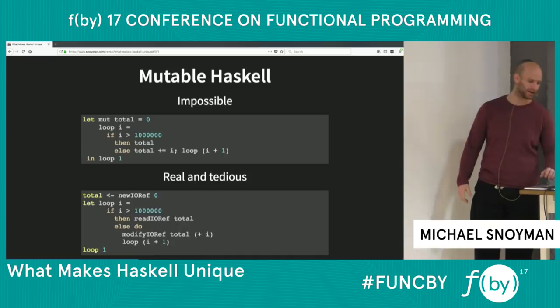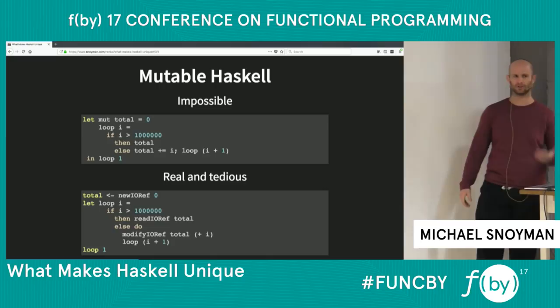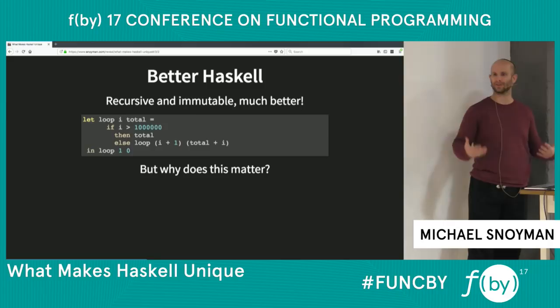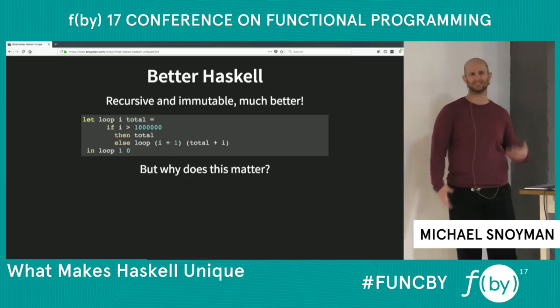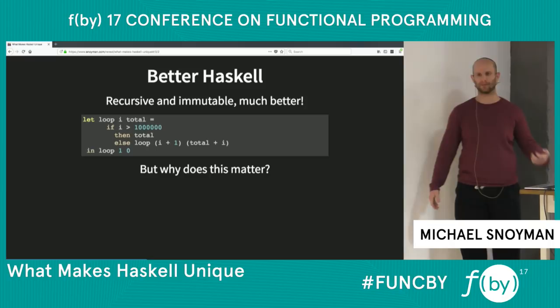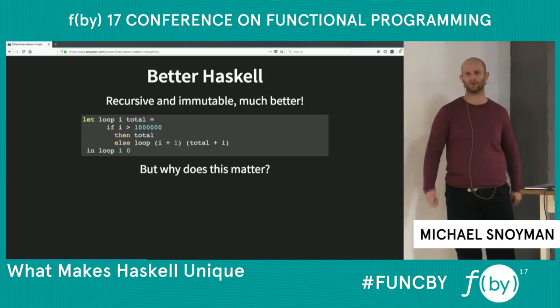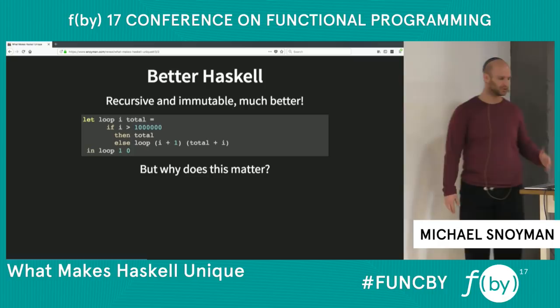This isn't actually the way anyone would write this kind of loop in Haskell. Instead, we'd stick with immutable variables and use a recursive function — a standard functional paradigm. The function takes parameters, we update those parameters each time through the loop, and that's how we avoid mutation. We create new values each time. But the question remains: why does any of this matter?